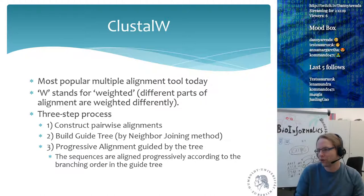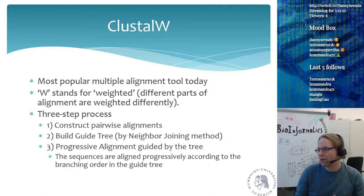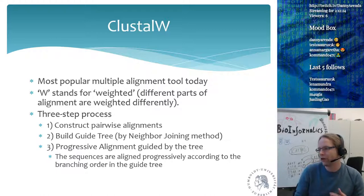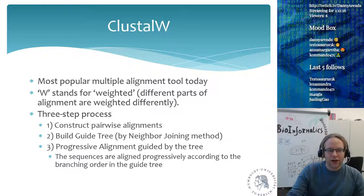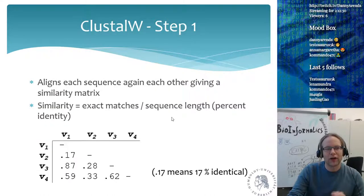I think ClustalW, because it's the first one that was really out there, is one which is really nice to describe, and it's easy to describe because it actually only has three steps. So how does it work? Step number one is constructing the pairwise alignments.